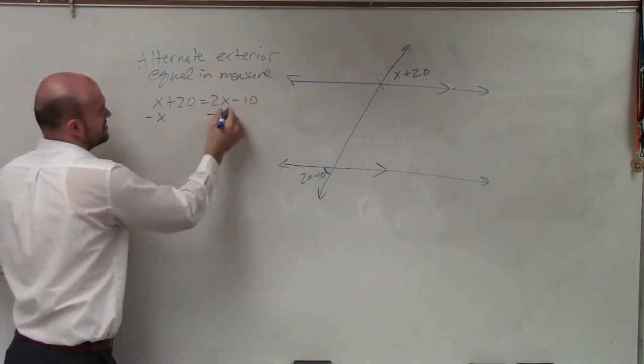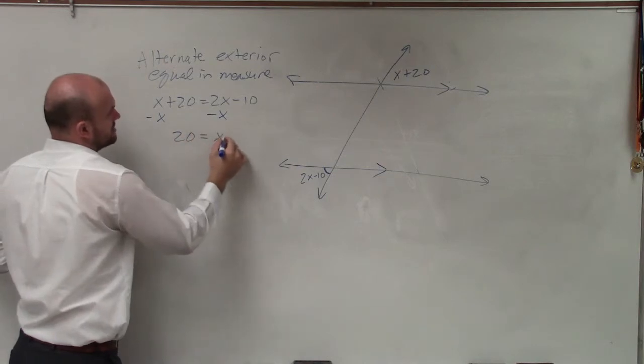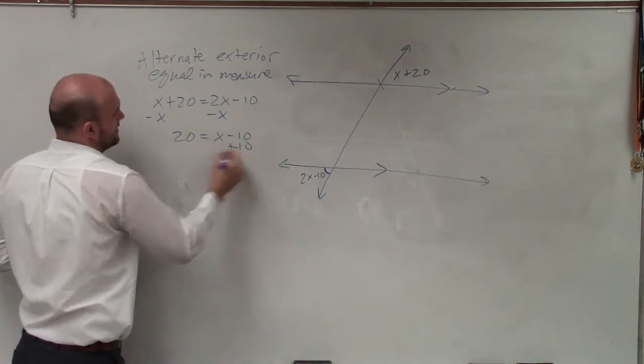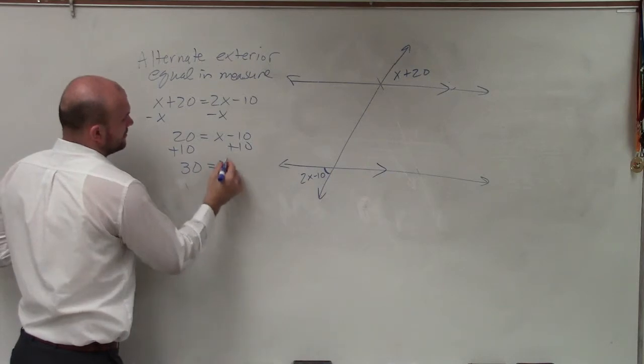Now I'll go ahead and solve for x. So I'll subtract an x over here. I get 20 equals x minus 10, add the 10, add the 10, 30 equals x.